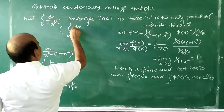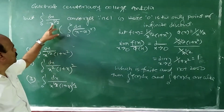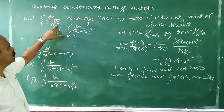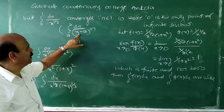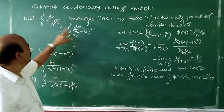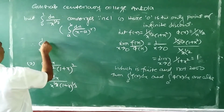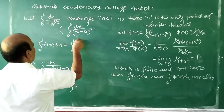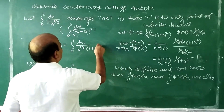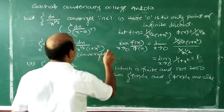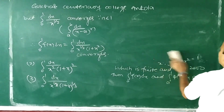Now we know that ∫0 to 1 dx/x^(1/2) converges because it is of the form ∫A to B dx/(x−A)^N with A = 0 and N = 1/2, and N < 1. Therefore, by the comparison test, ∫0 to 1 dx/[x^(1/2)(1+x²)] also converges. This is how we apply the comparison test using the two useful integrals.